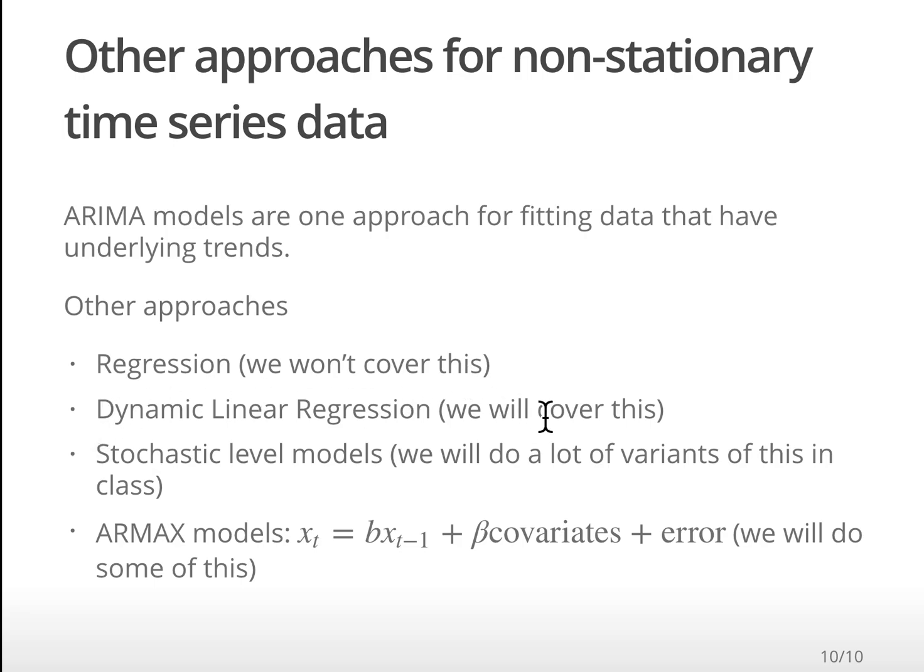One approach is something called dynamic linear regression. This is actually very similar to multivariate regression, but we allow the influence of the covariates to change through time. We're going to talk about those models. We're going to do a lot of what's called the stochastic level models, where we model that underlying trend, that non-stationary trend, with some kind of random walk. And we will also use something that's called an ARMAX model. And that is a kind of time series model where, it's like a random walk, but where the jumps in the random walk are being, so the errors are being explained by some covariates.